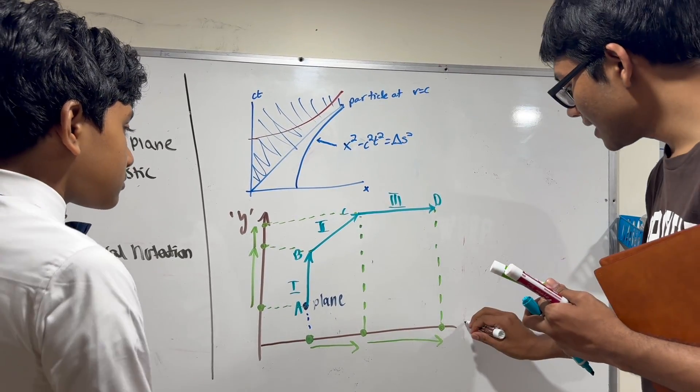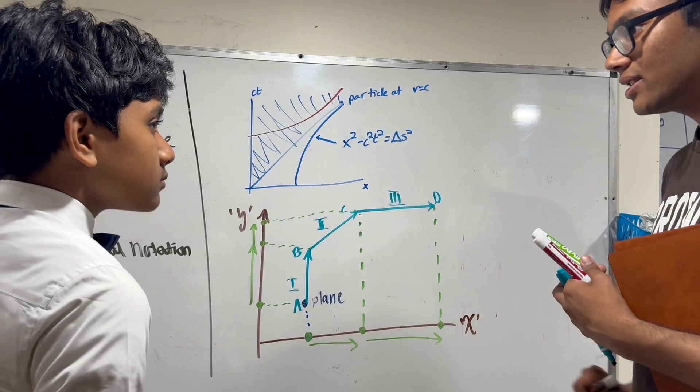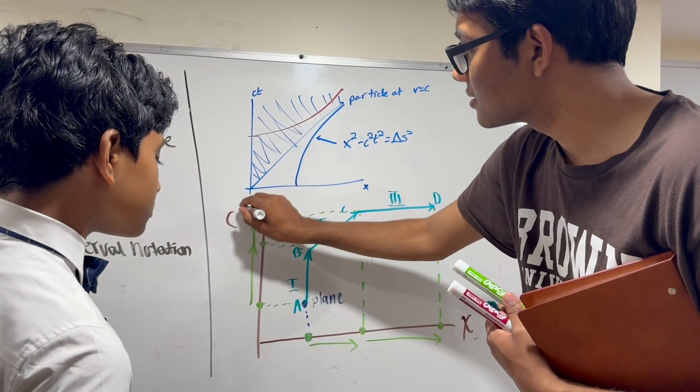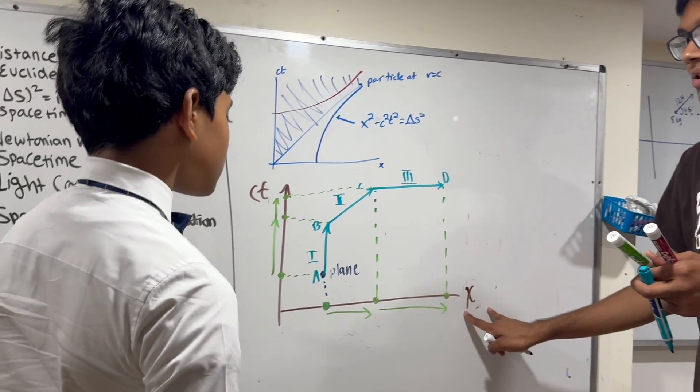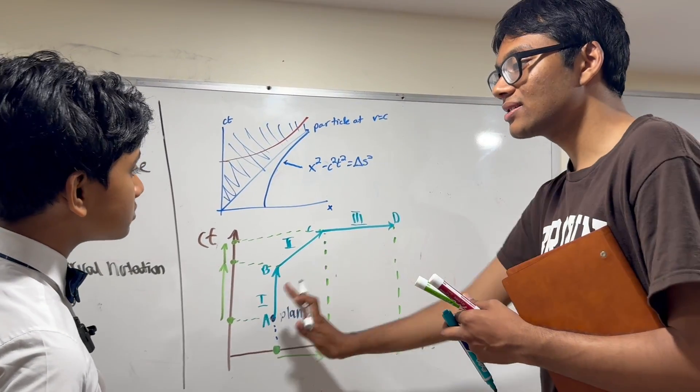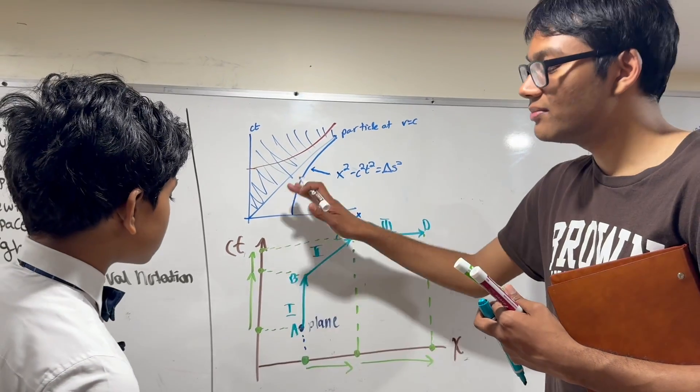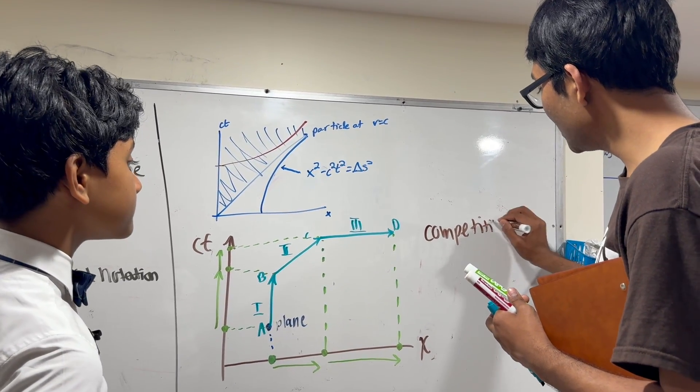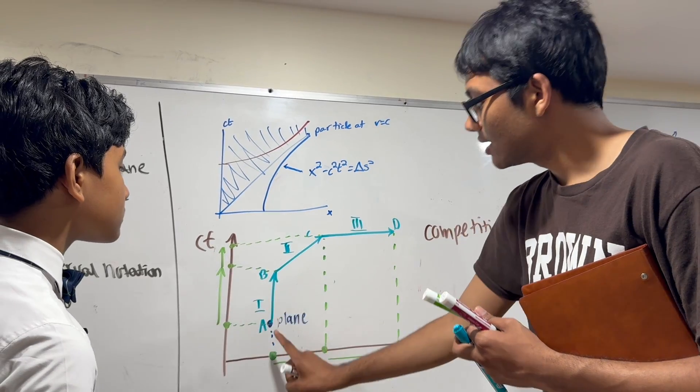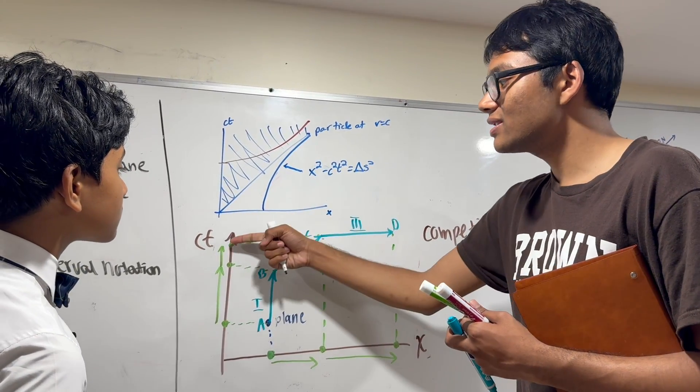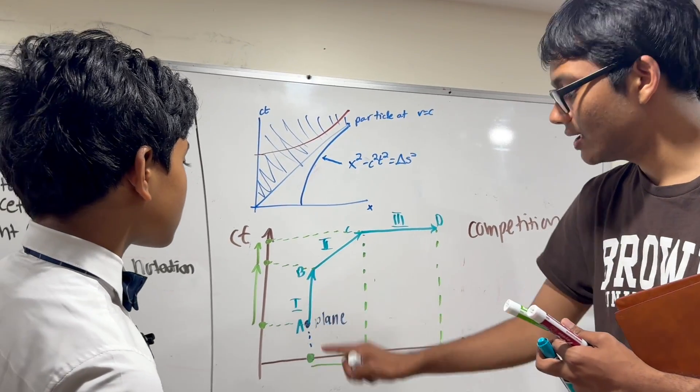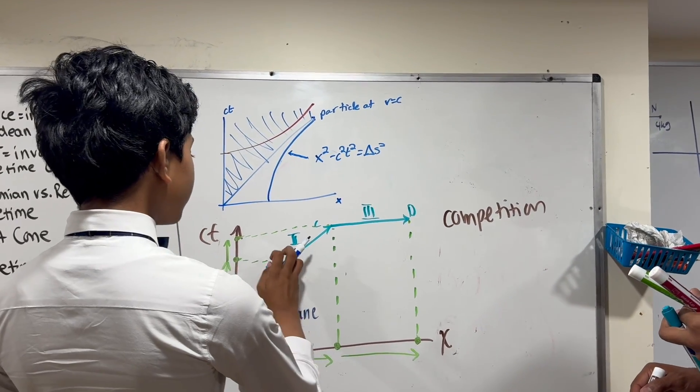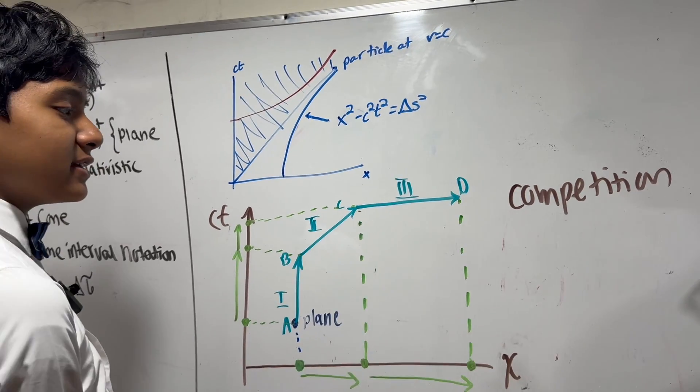So what does this tell you? Instead of calling this X and Y, let's replace this Y with X and CT. We're going to represent the X as our position, the Y as our time. Moving horizontally means we're moving in space. Moving vertically means we're moving in time. So that means there's a competition between moving in space and moving in time. The more you move in space, the less you move in time. The more you move in time, the less you move in space.